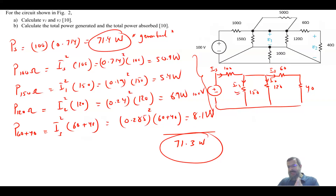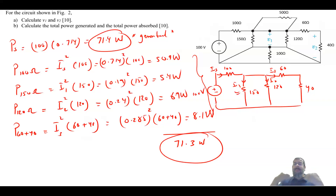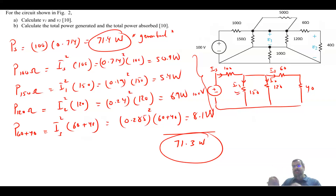That is a very classical question in A1 tests. It asks you to implicitly reduce the circuit, find currents, find voltages, and find power. The key point, in my opinion, is basically to number the nodes.